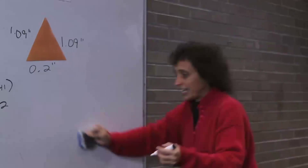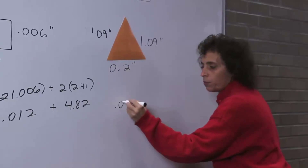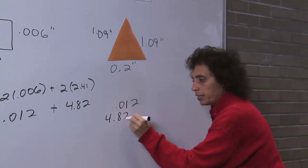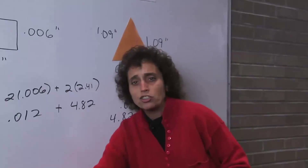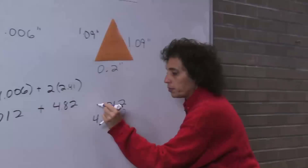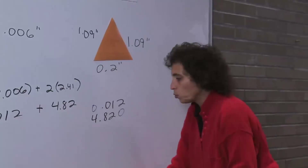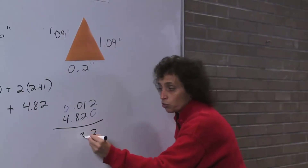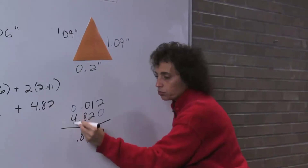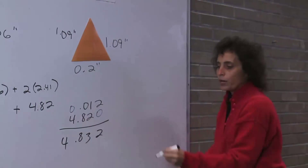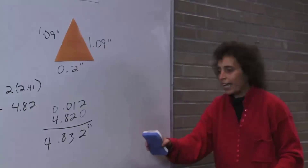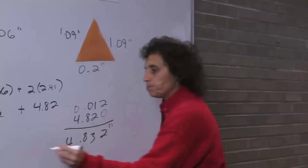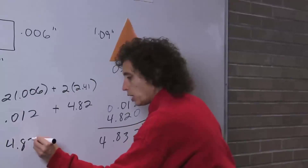That means I have to line up my decimals. I'm going to add 0.012 to 4.82. Remember to line up my decimals — you may want to use a little placeholder. So: 2 plus 0 is 2, 1 plus 2 is 3, 8 plus 0 is 8, 4 plus 0 is 4. So the perimeter is 4.832 inches, or 4 and 832 thousandths.